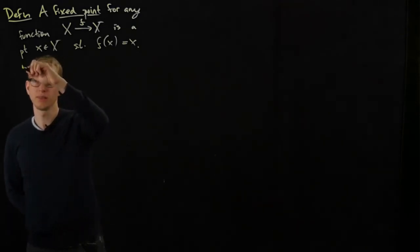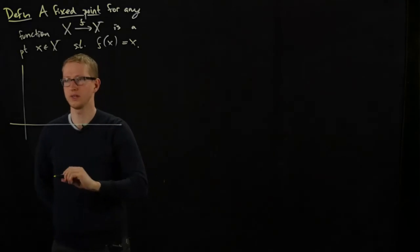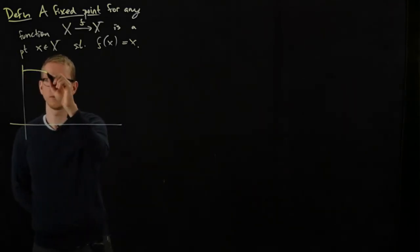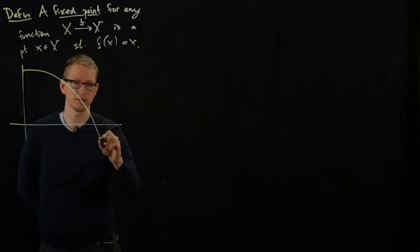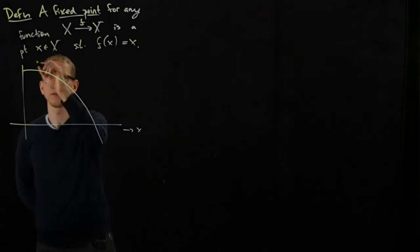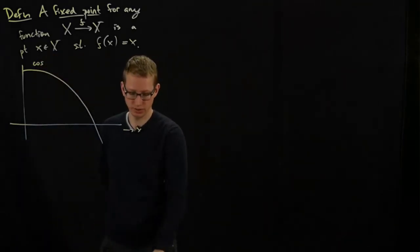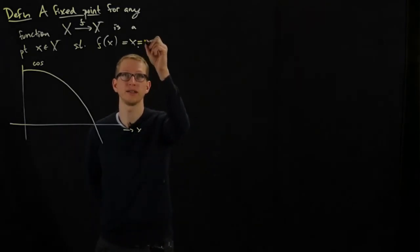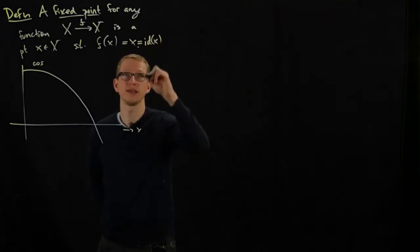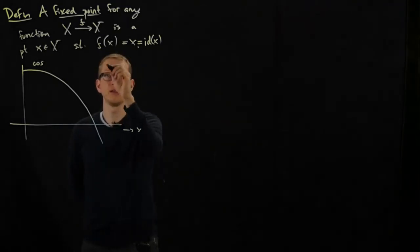For example, we can look at the function cosine of x, which looks something like this and goes on periodically. A fixed point of this function, if I rewrote this in a slightly different manner and said it's a point for which f(x) equals the identity applied to x, we're looking at the set of elements that are fixed under this function.